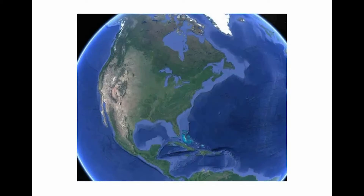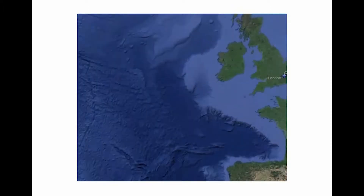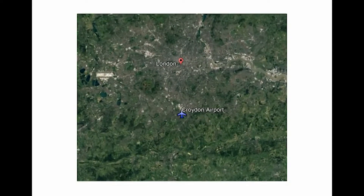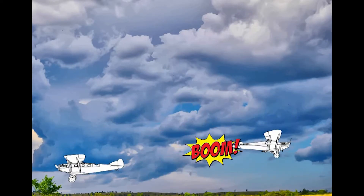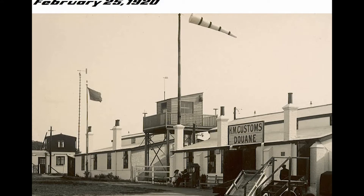The first air traffic control tower was actually built in a small town a few kilometers south of London, in the United Kingdom, at Croydon Airport. Back in the day, Croydon was the busiest airport on earth — flights down to Belgium, down to Paris. Things were getting sticky, and one day an aircraft taking off and one landing collided. So the authorities decided to regularize things and build an aerodrome control tower.